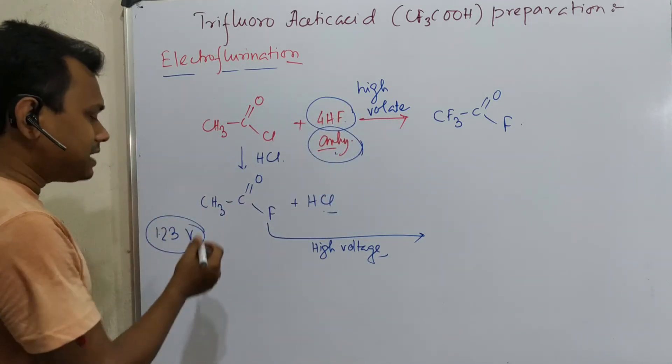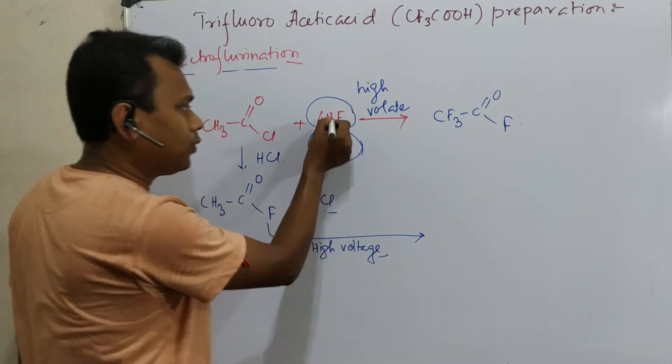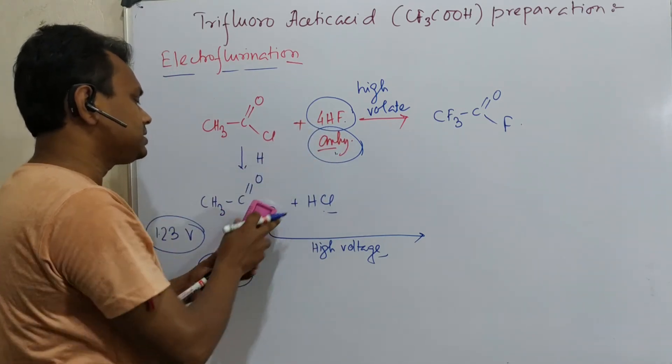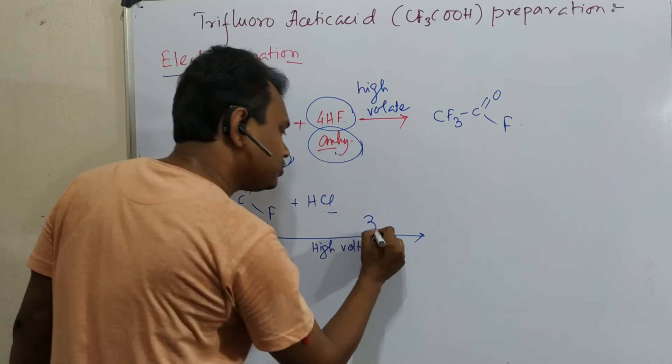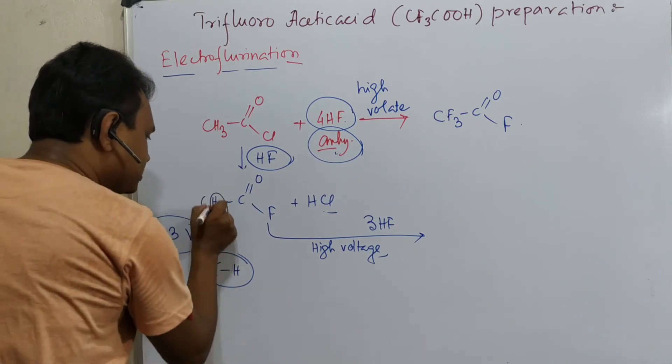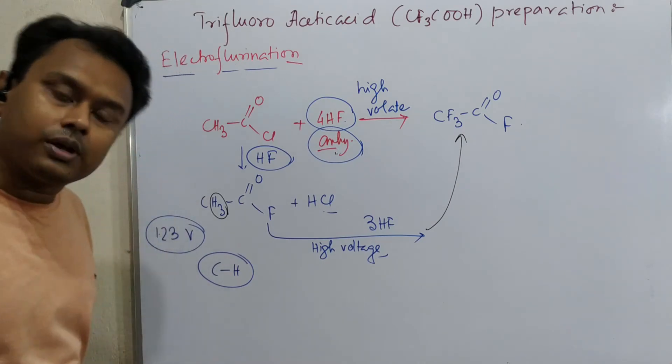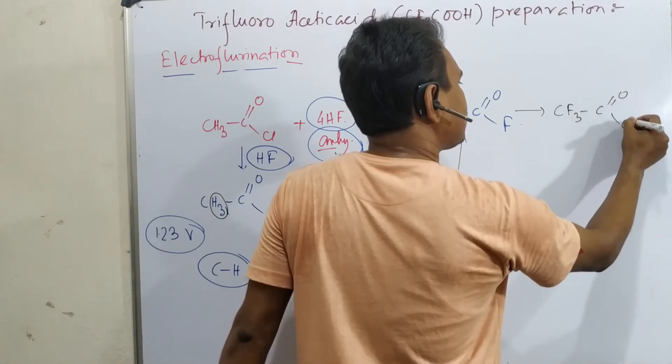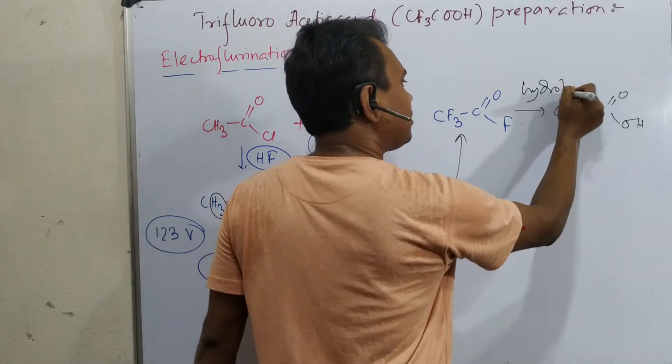In high voltage, this CH bond gets oxidized. I have taken 4 HF, so 1 equivalent consumed, so 3 equivalent left. There are 3 hydrogens, so these 3 will be replaced. So it will result in CF3-COF. Now we wanted CF3-COOH. How could this be done? Simple hydrolysis.